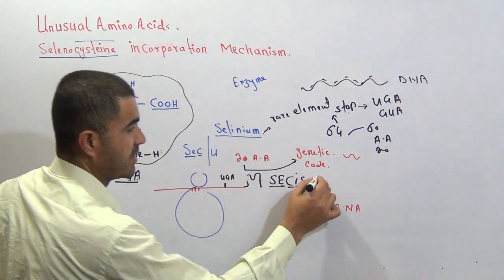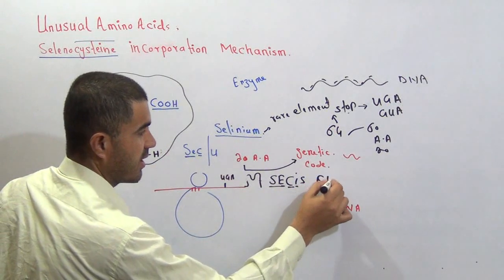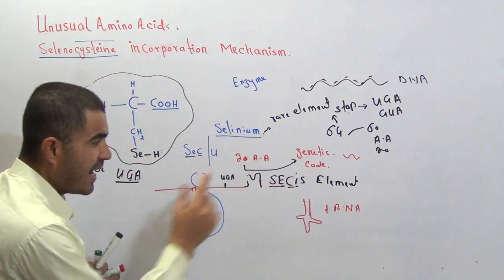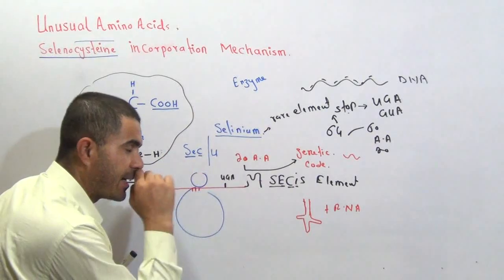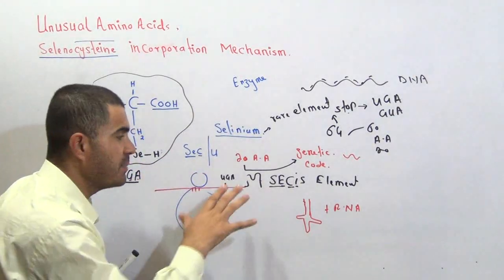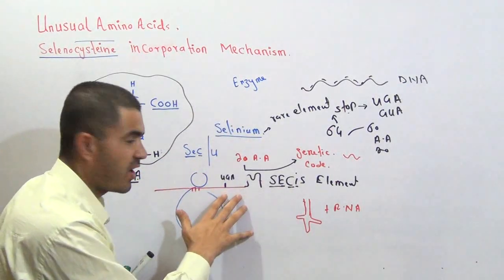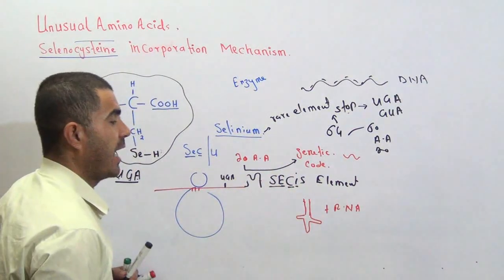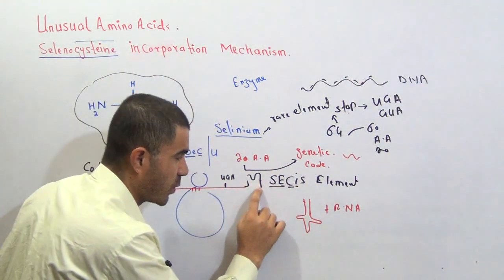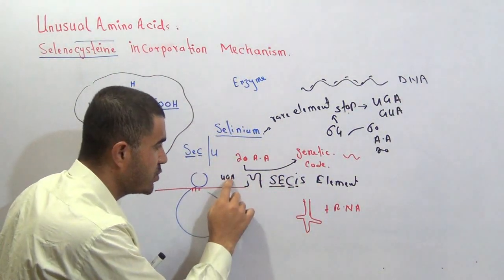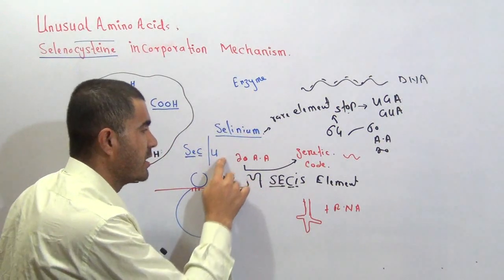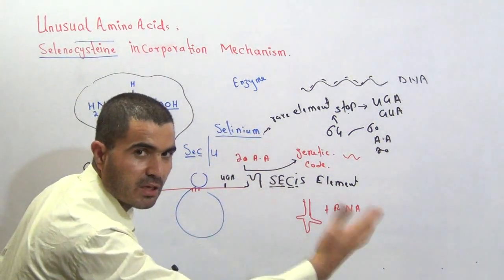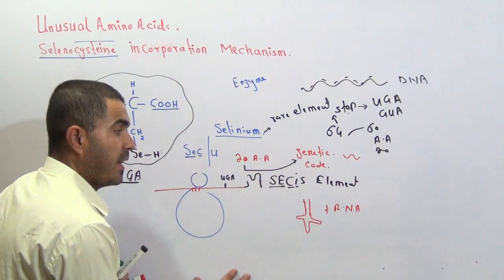This is also called a sequence element. When that SECIS sequence is attached with the messenger RNA, UGA will be recognized as coding for selenocysteine. In other messenger RNAs this SECIS sequence will be absent, and in the absence of this sequence, UGA will be recognized as a stop codon.